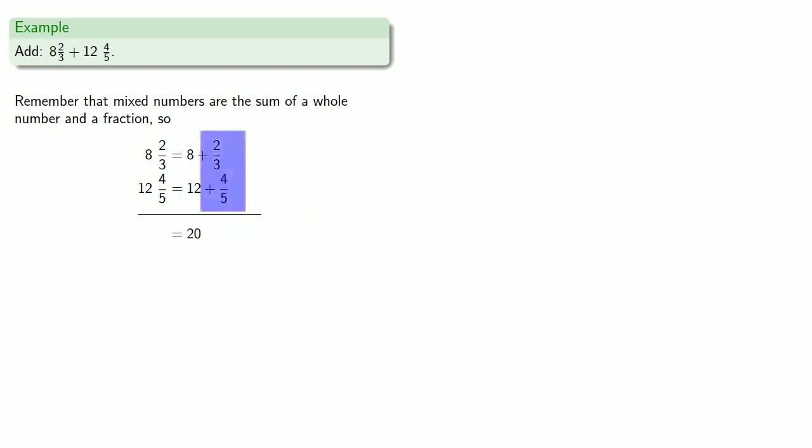Next, we'll add the fractional parts, 2/3 plus 4/5. Because their denominators are different, we have to get them to have the same denominator, and a common denominator is the product 3 times 5. So we'll transform 2/3 and 4/5 into fractions with denominators of 3 times 5.